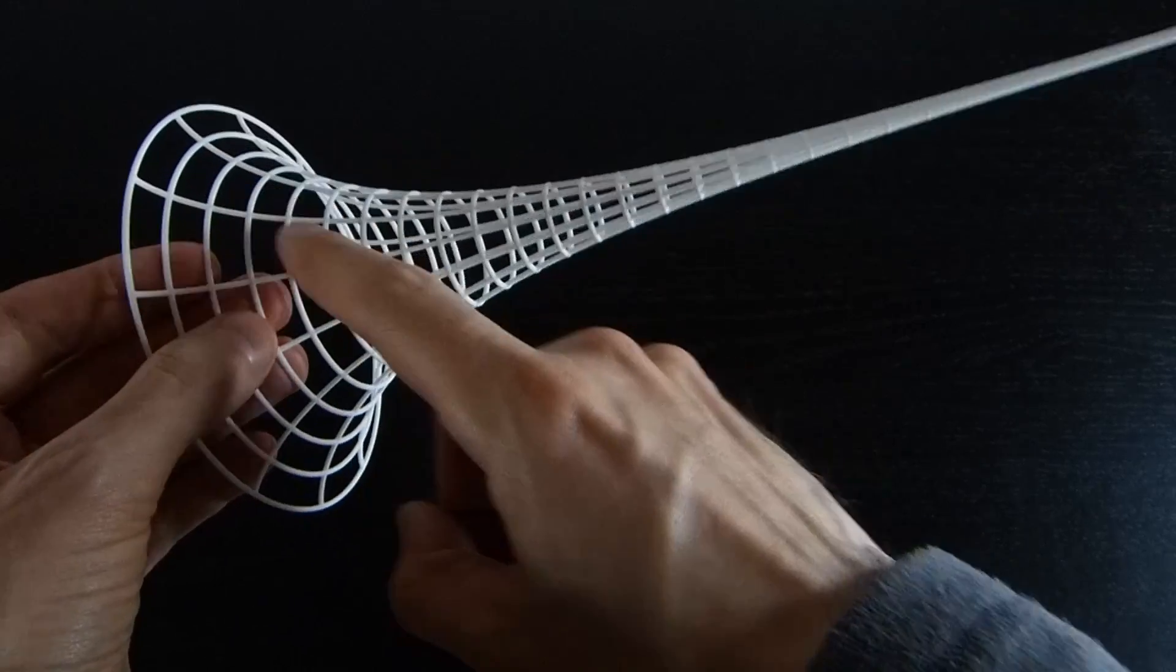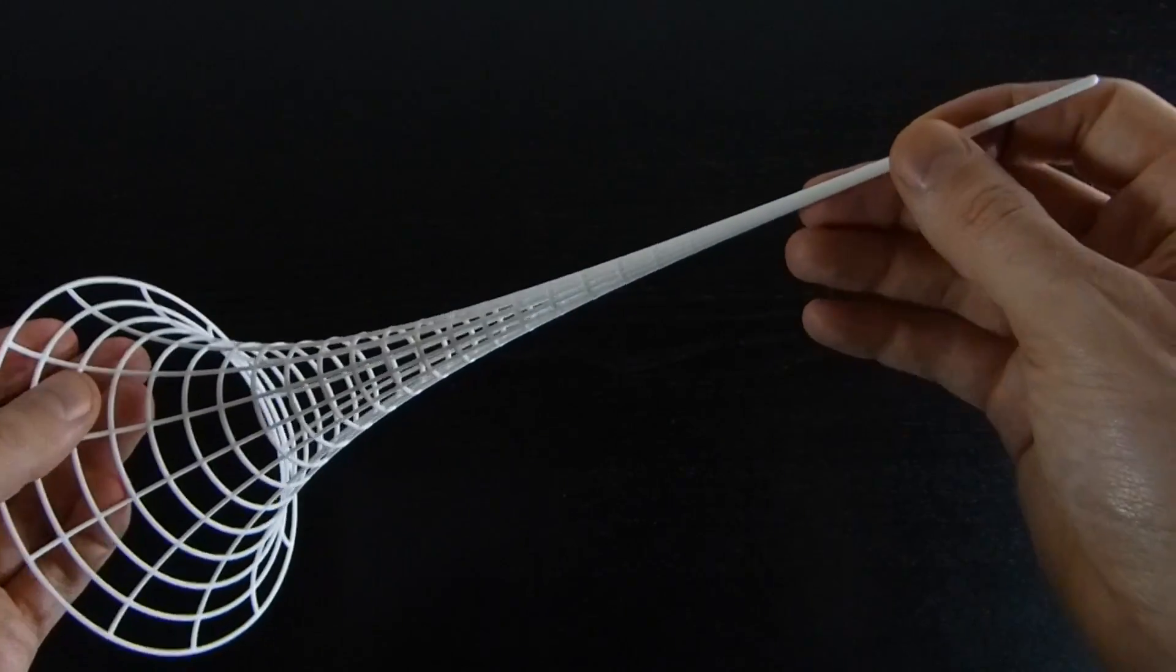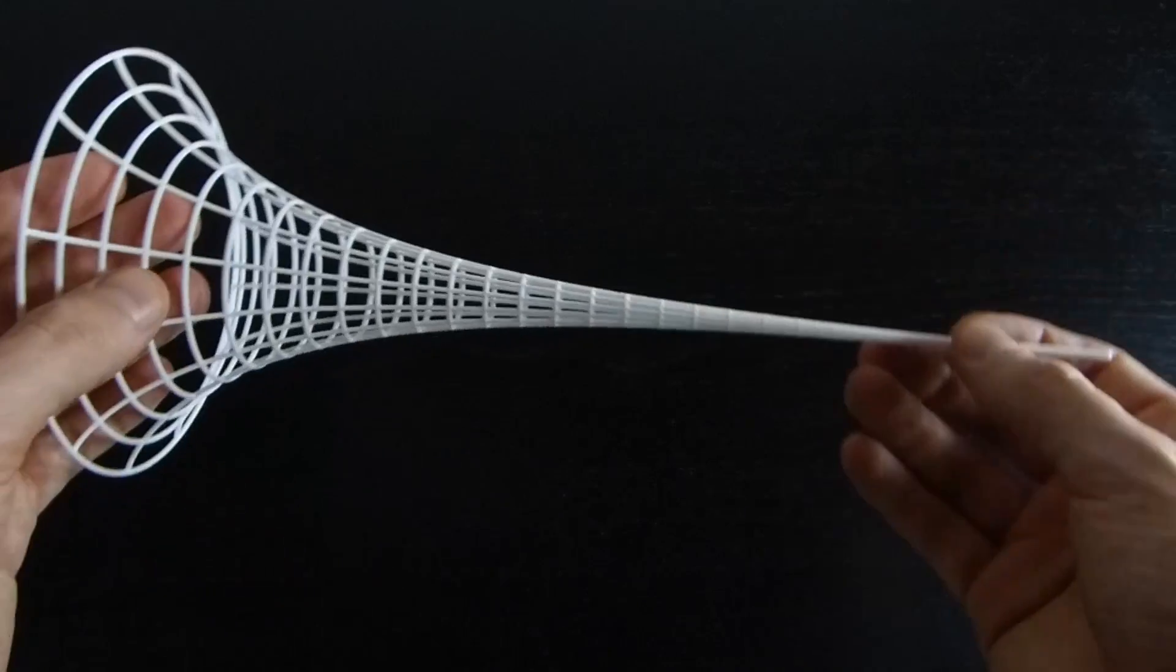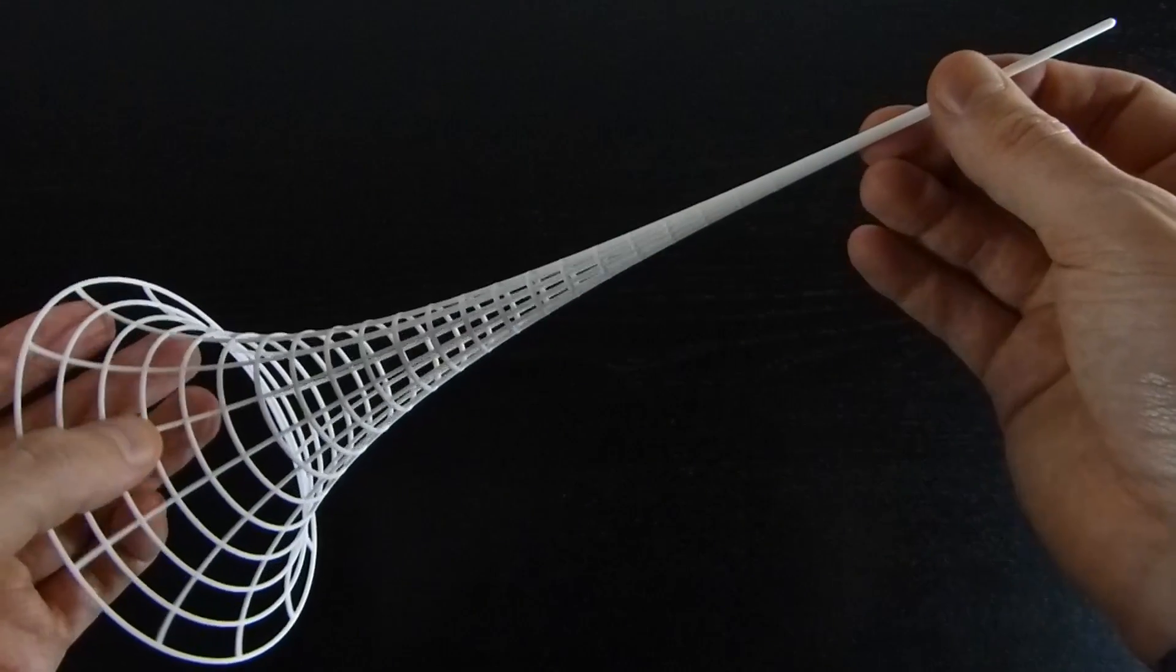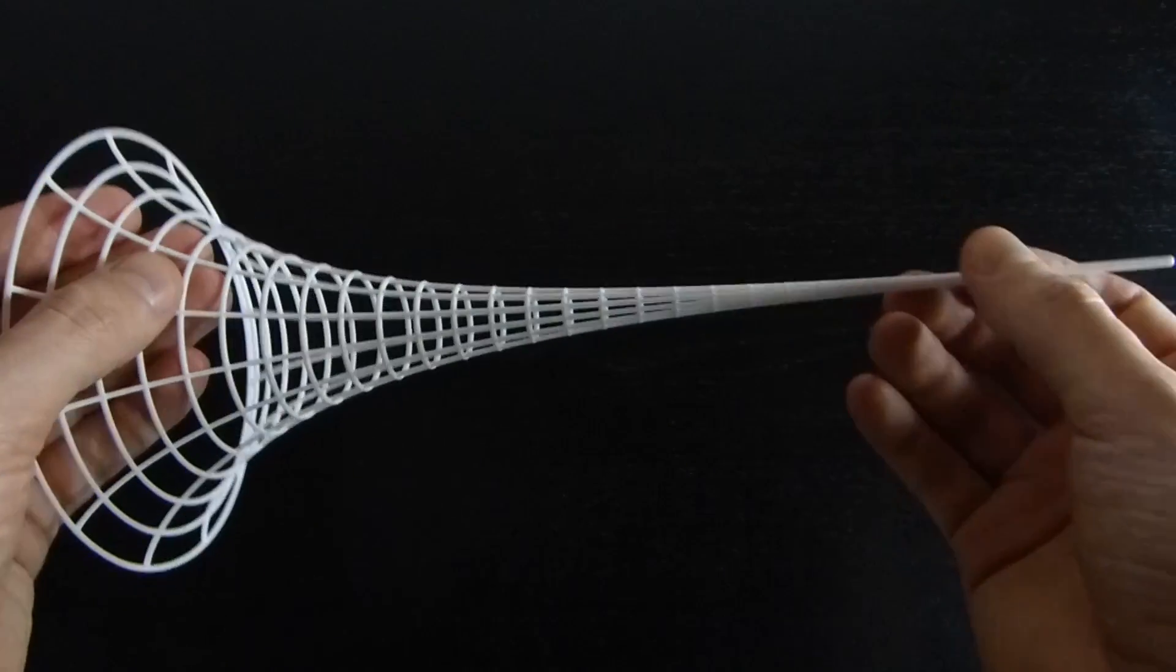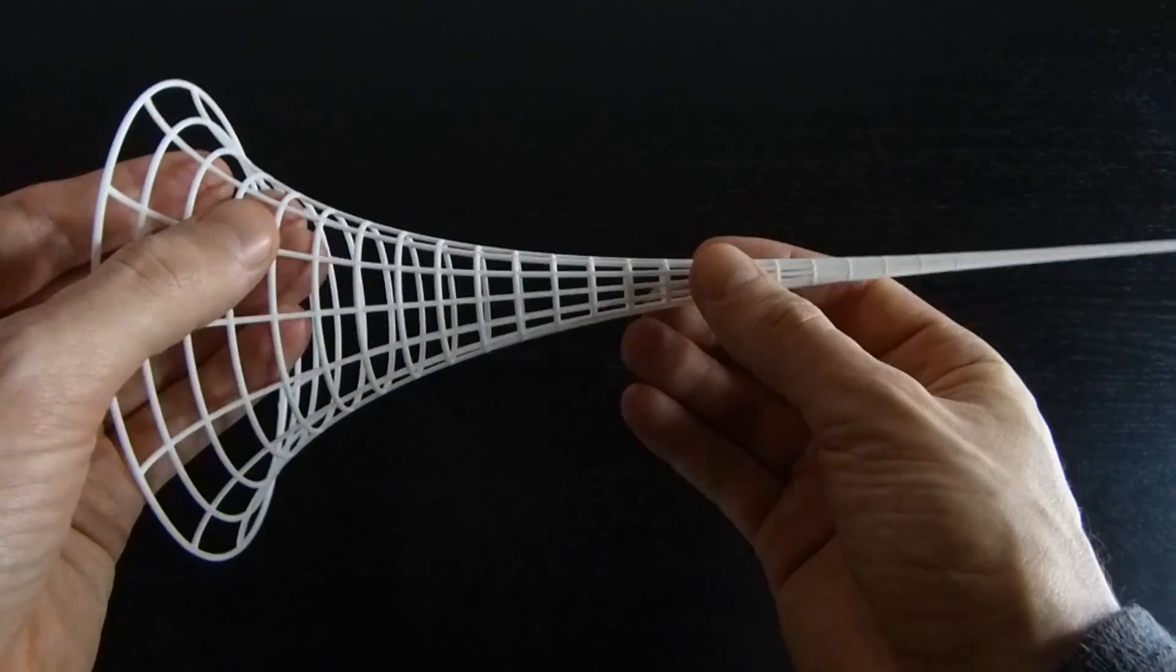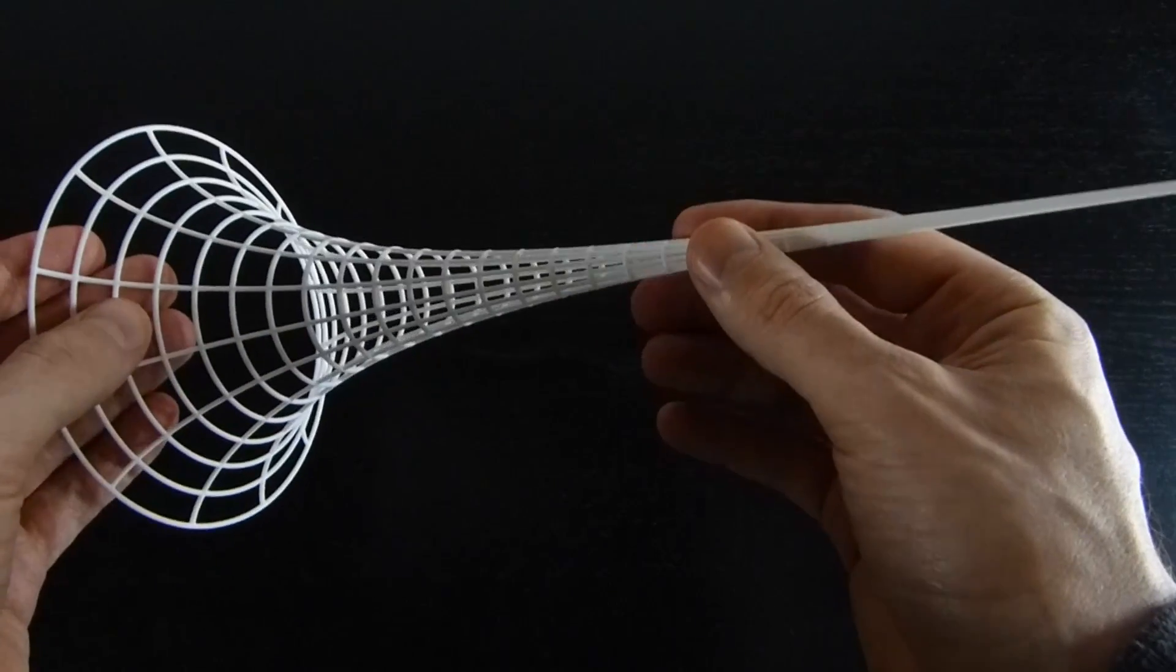and those curve in opposite directions. Whereas the sphere has constant curvature positive one, the Pseudosphere has constant curvature negative one. So they're all saddle points everywhere on the surface with the same negative curvature.